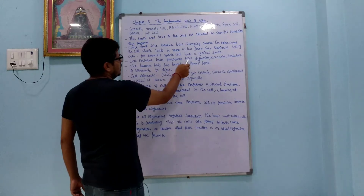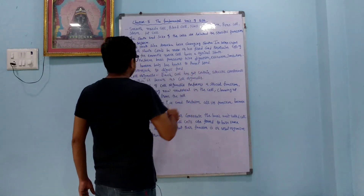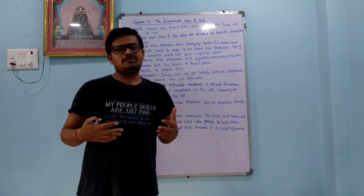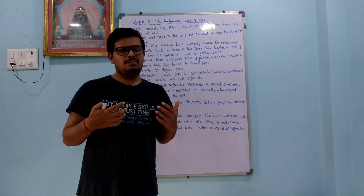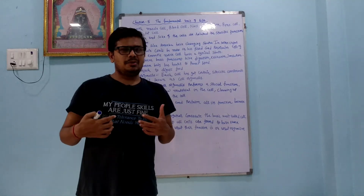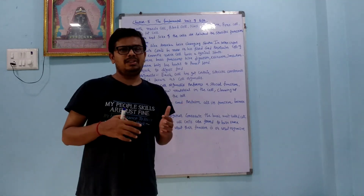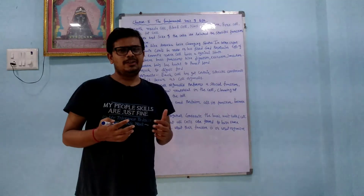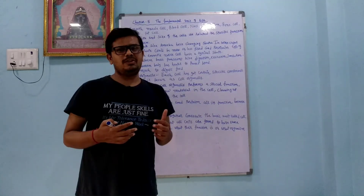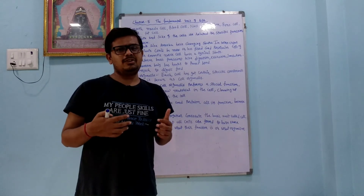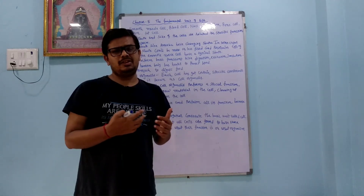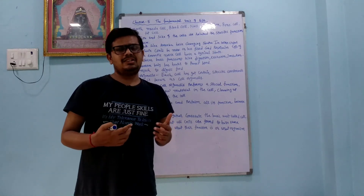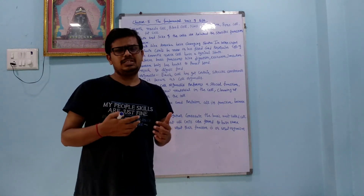Cells perform basic functions like digestion, excretion, sensation, and different things. Our body is made up of different types of cells, and all parts of an organ contain different types of cells. When all cells come together, they make tissue, and all tissues together make organs. For example, the stomach has the function of digestion, nerve cells have the function of sensing and responding, and excretory cells remove waste products.